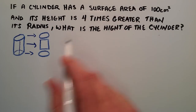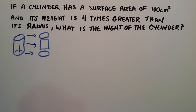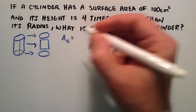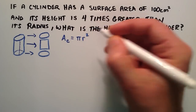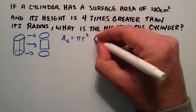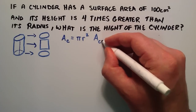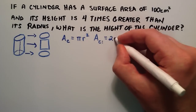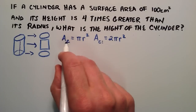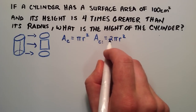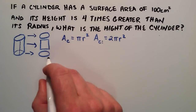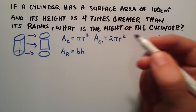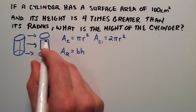Our total surface area consists of three shapes: two circles and one rectangle. The area of a circle is pi times r squared. Since we have two circles, the combined area of both circles is 2πr². The area of a rectangle is base times height, where the height here is just the height of the cylinder.